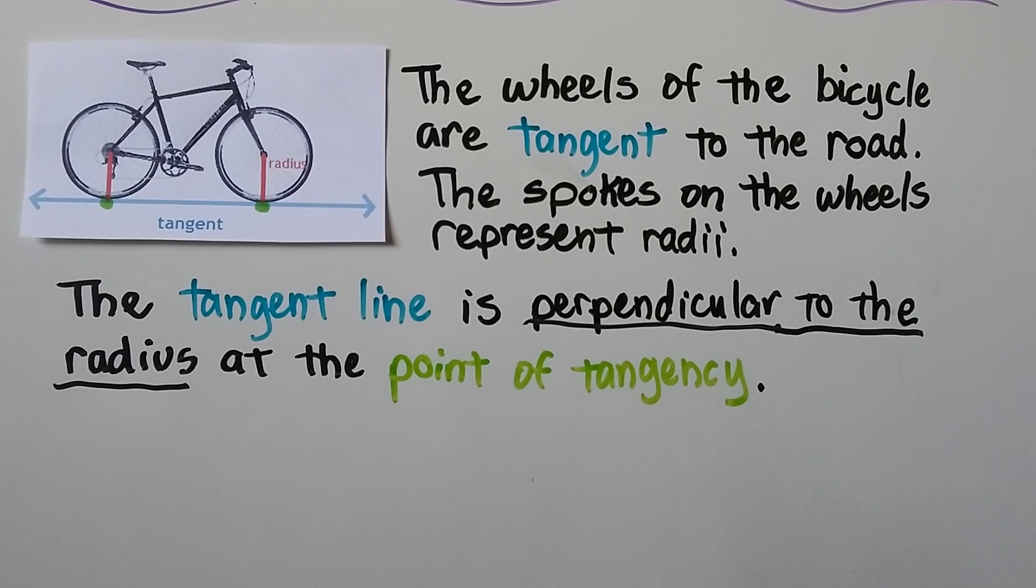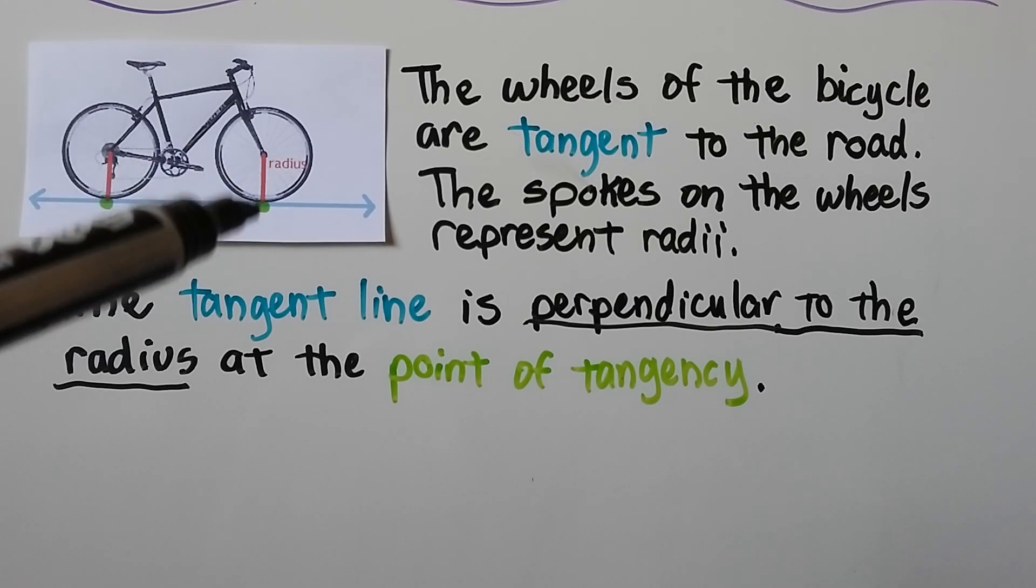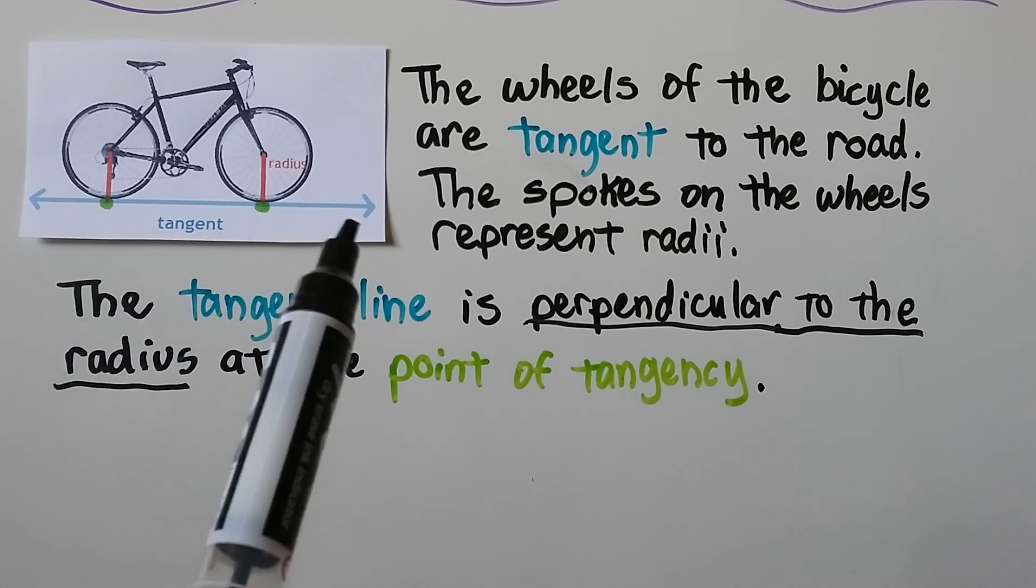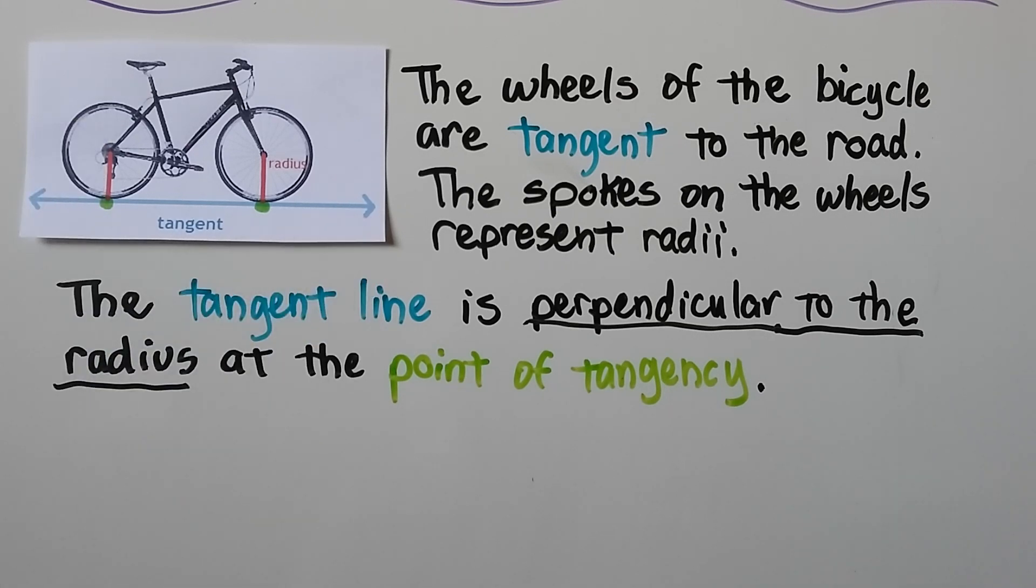Looking at this bicycle, the wheels of the bicycle are tangent to the road. And the spokes on the wheels represent radii. The tangent line is perpendicular to the radius at the point of tangency.